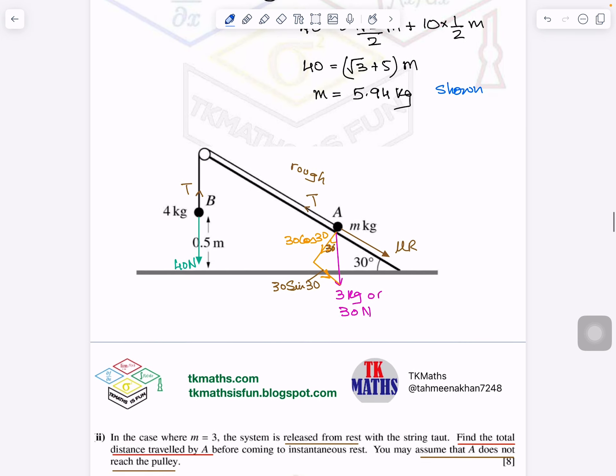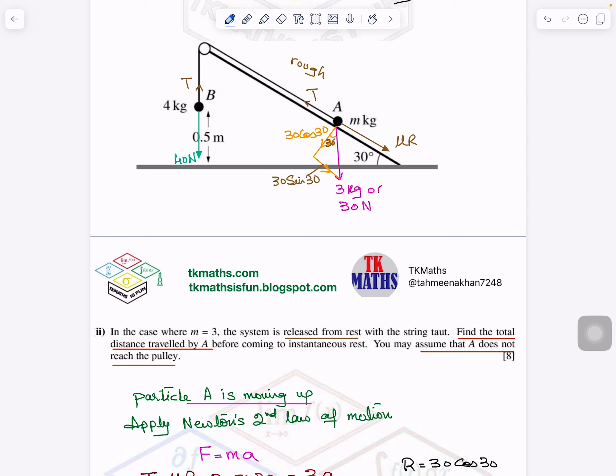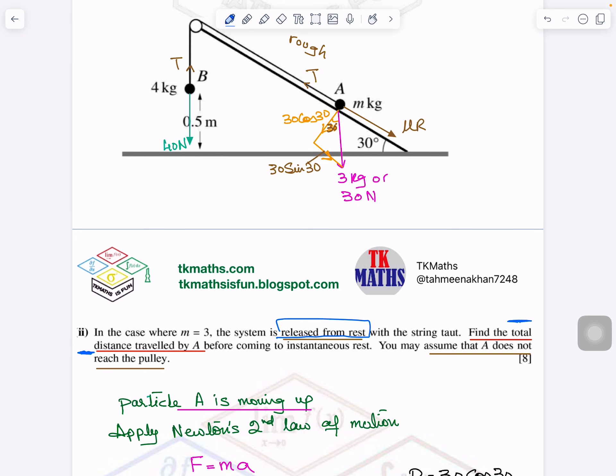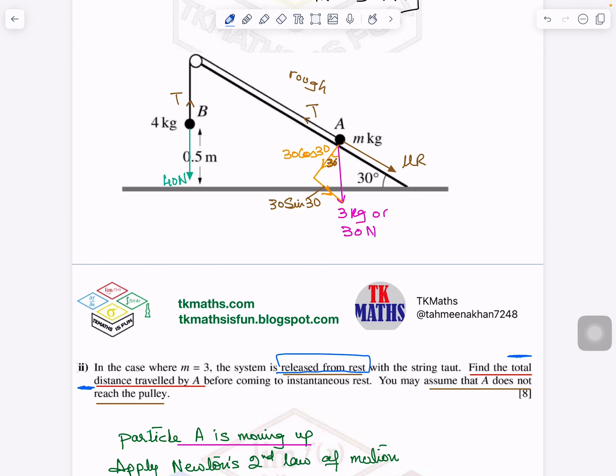Now let us see part 2. I have given the diagram again here so that you can relate it. What is happening in this case? You have to find the total distance traveled by particle A when you release the system, and it is released from rest. Before we read the question, what comes in your mind? You need to understand the situation. Question is telling you here we have to assume that A does not reach B. Time limit is not given, nothing is given, mass is changed, mass is 3 now, and that is why I have written here 3 kg or 30 newton.